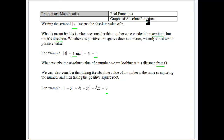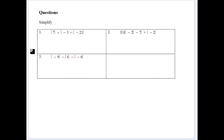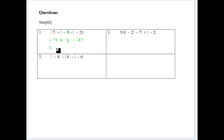We want to graph these types of functions and solve equations with them. Let's look at this example: 7 times the absolute value of minus 3, which gives us 3, minus the absolute value of 21. It's like working with brackets — you follow the correct order of operations. So that gives us 21 minus 21, which gives us 0.